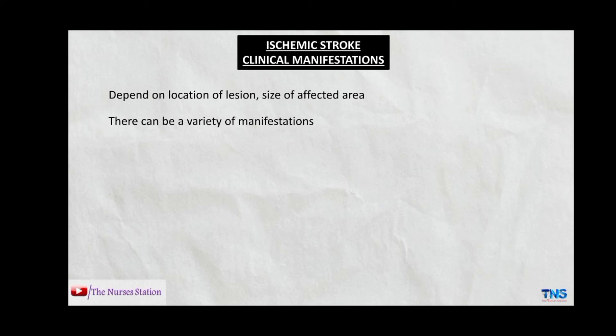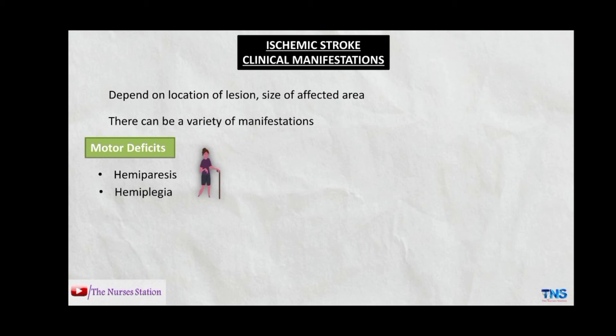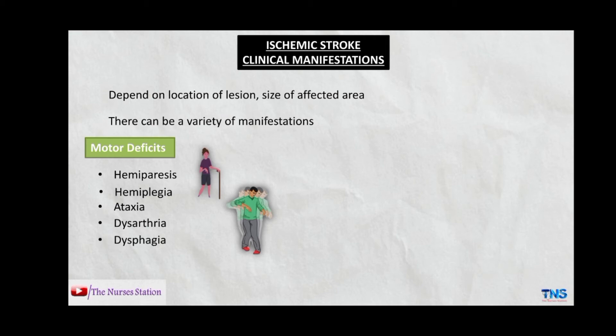The clinical manifestations of ischemic stroke depend on the location of the lesion, the part affected, and the size of the affected area. Motor deficits may include hemiparesis — weakness on one side of the body — or hemiplegia — paralysis on one side. If the left side of the brain is affected, hemiparesis and hemiplegia occur on the right side of the body, and vice versa. The patient may also have ataxia, dysarthria, and dysphagia.